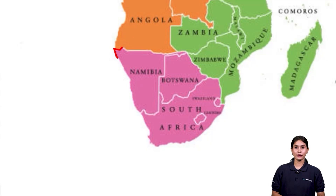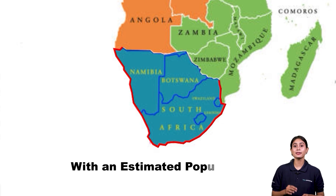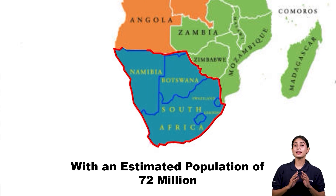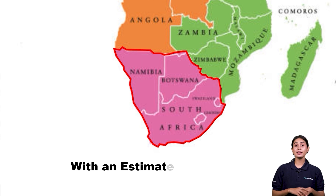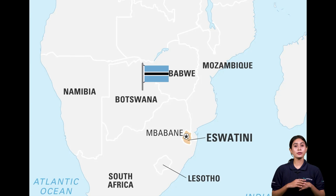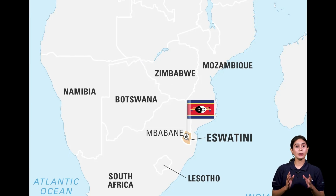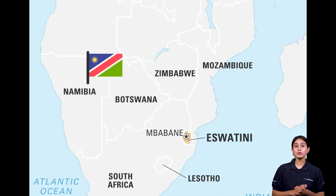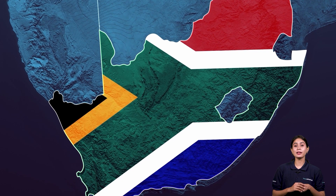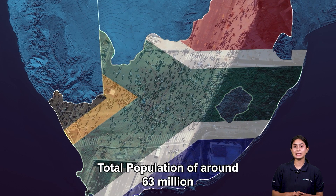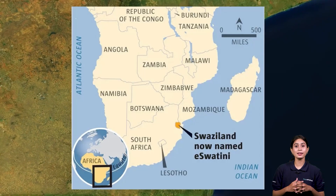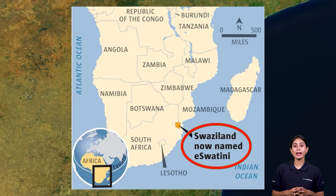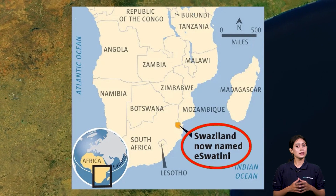Last are the countries of Southern Africa. Southern Africa, with a population of an estimated 72 million, is the least populous sub-region of Africa. These countries are Botswana, Eswatini, Lesotho, Namibia, and South Africa. Most of its population lives in South Africa, which has a total population of around 63 million. The least populated country is Eswatini, also known as Swaziland, which is a landlocked country.